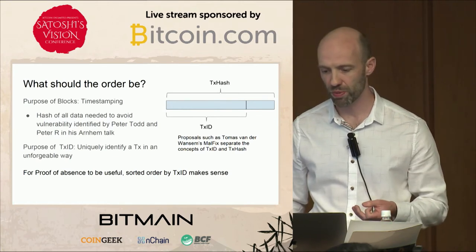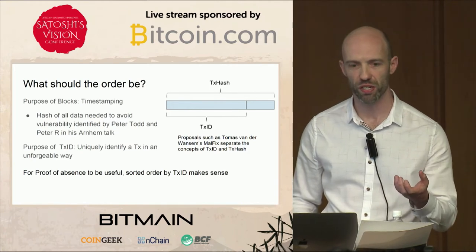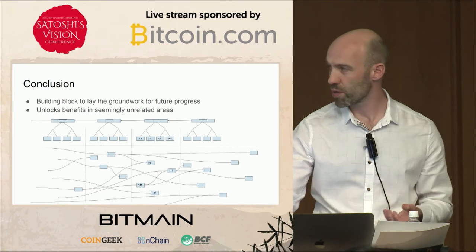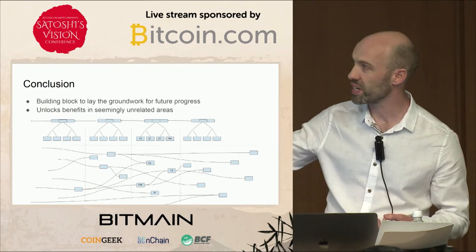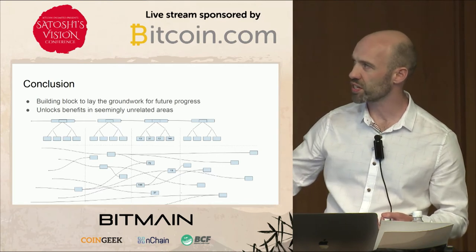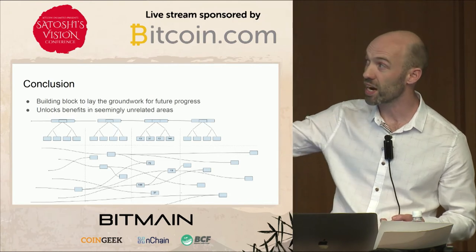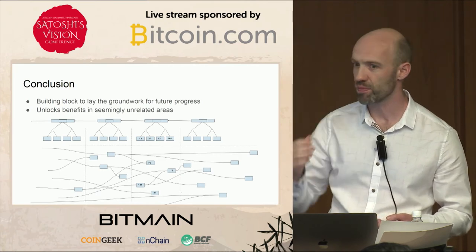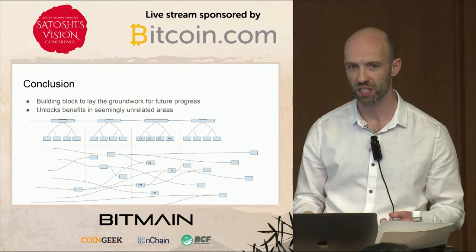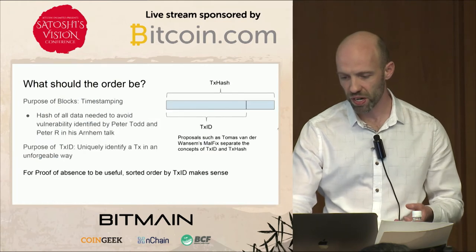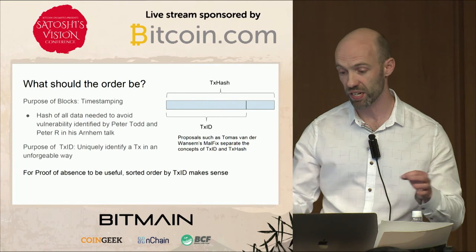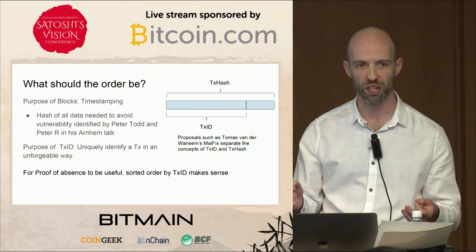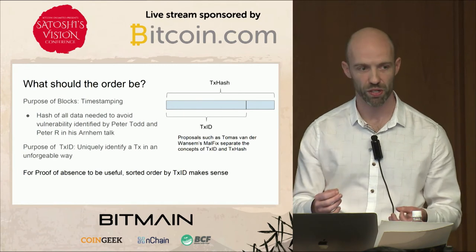But if you look at things like Thomas's Malfix proposal — which he just presented — that takes apart the two concepts of the transaction hash and the transaction ID. The bottom part of the causal DAG would be connected by the ID, because that's where you need a unique identifier for each transaction. But for the blockchain, you want the transaction hash of all the data in the transaction to be what's used to build the tree, because you're timestamping the information and need proof that it existed at that point in time. So you can separate the transaction ID from the transaction hash, and maybe it makes more sense to order by transaction ID, since if you're going to do absence proofs that's what you want to prove — that inputs are absent.